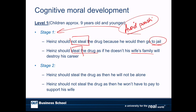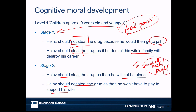In stage two, we see the reasoning evolve from avoiding punishment to some form of immediate exchange or benefit to the decision maker. Heinz should steal the drug so he won't be alone — he gains the continued company of his wife. Or Heinz should not steal the drug so he won't have to pay to support his wife — the benefit is financial. Again, it's the rationale, not the actual action.